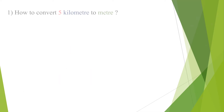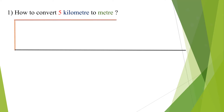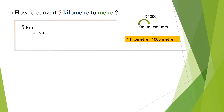How to convert 5 kilometers to meters? To convert kilometers to meters, we multiply the kilometer length value by 1000. 5 kilometers is equal to 5 × 1000. We already know that 1 kilometer is equal to 1000 meters. So, 5 × 1000 is equal to 5000 meters.